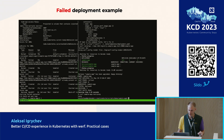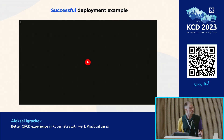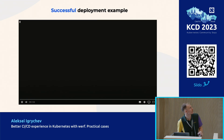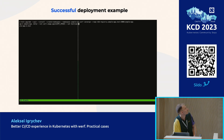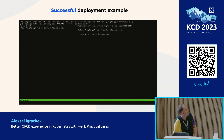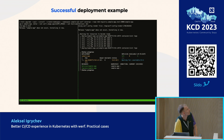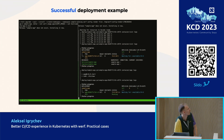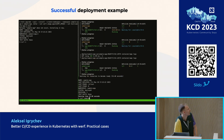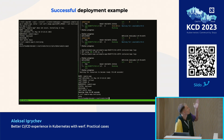And one more example — a successful deployment. The same command, same chart. We have logs, container logs, and status progress. Application logs appear and then it's done. That's how it looks: Helm versus Werf.